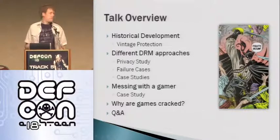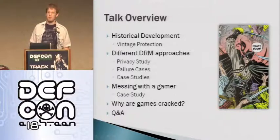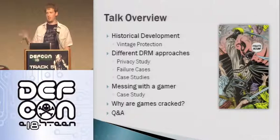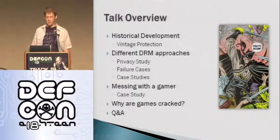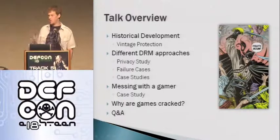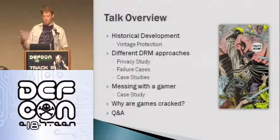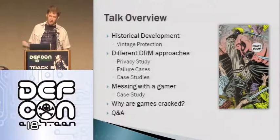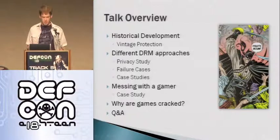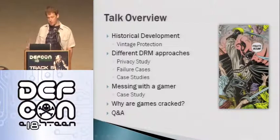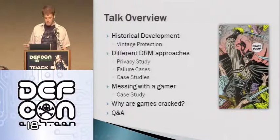The outline for my talk: first we'll start off with some historical development, which is about the copy protection that DRM and everything we're going to talk about and the privacy impacts actually came from. It's important to understand the historical development to understand where we really are at this point in time. Then we'll look at the different DRM approaches that exist at the moment, do a privacy study on each of them, look at some of the failure cases, which might be quite amusing.